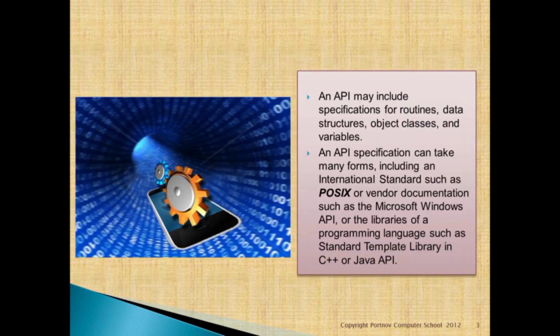An API may include specifications for routines, data structures, object classes, and variables. An API specification can take many forms, including international standards such as POSIX, vendor documentation such as the Microsoft Windows API, or libraries of programming languages such as the Standard Template Library in C++ or the Java API.